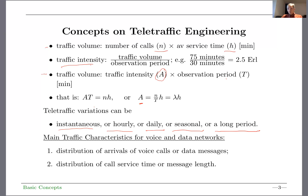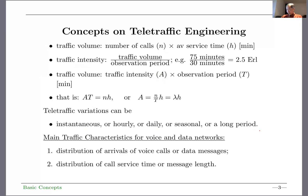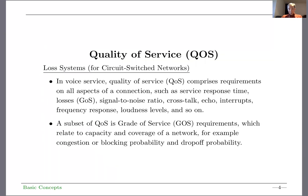There are two major traffic characteristics for voice networks: the distribution of voice call arrivals, and the distribution of service time. The same applies to data networks: the distribution of data message arrivals, and the distribution of message length. With that, we can move to the next slide.